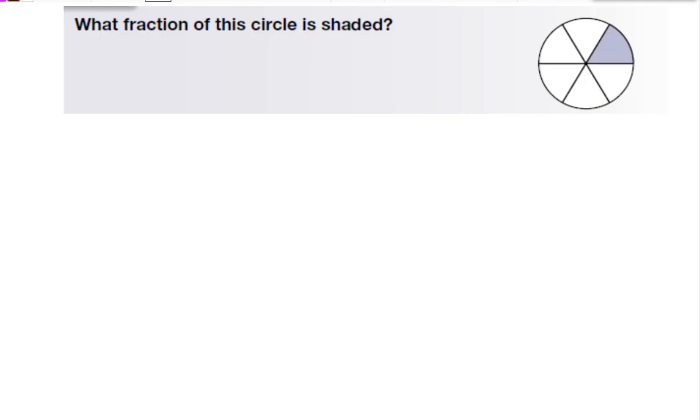So here we have what fraction of the circle is shaded. I'm going to draw my fraction bar and I'm going to count. Since I want to know how much is shaded my numerator should be how many parts are shaded. In this case there's only one part that is shaded.